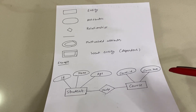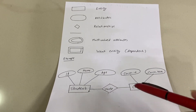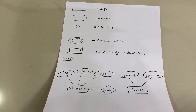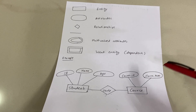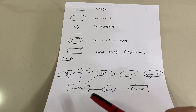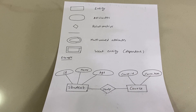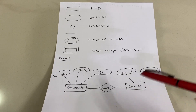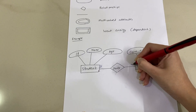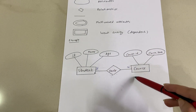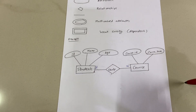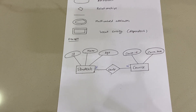Here is a simple ER diagram example with two entities: student and course, shown in rectangles. Student has three attributes — ID, name, and age — and course has two attributes: course ID and course name. They are connected by a line with a diamond in between representing the relationship 'studies'. The notation M and N indicates a many-to-many relationship, since students can enroll in multiple courses and courses can have multiple students.